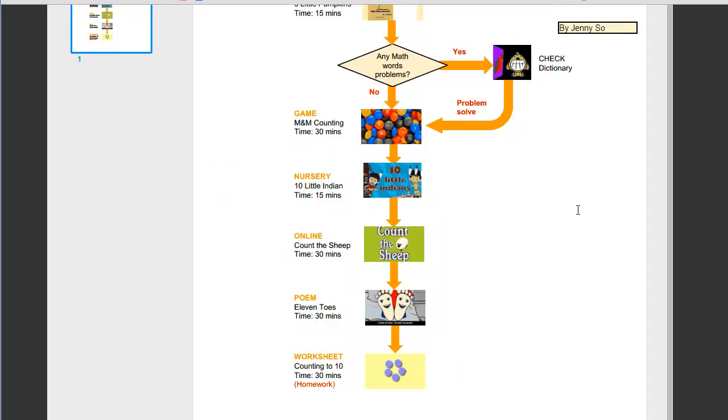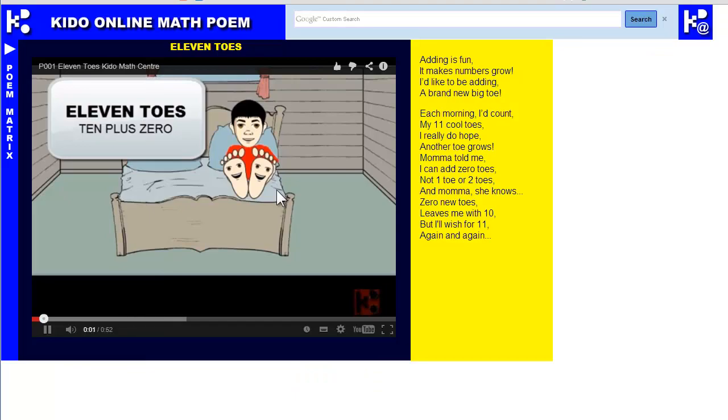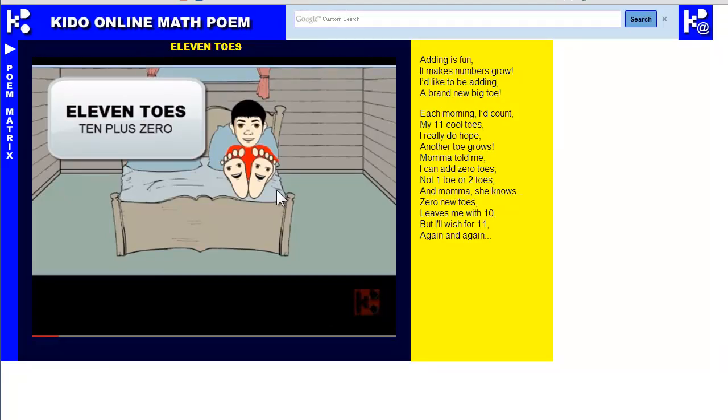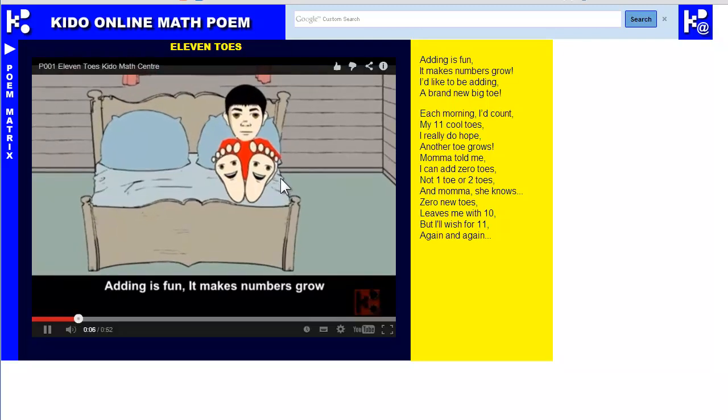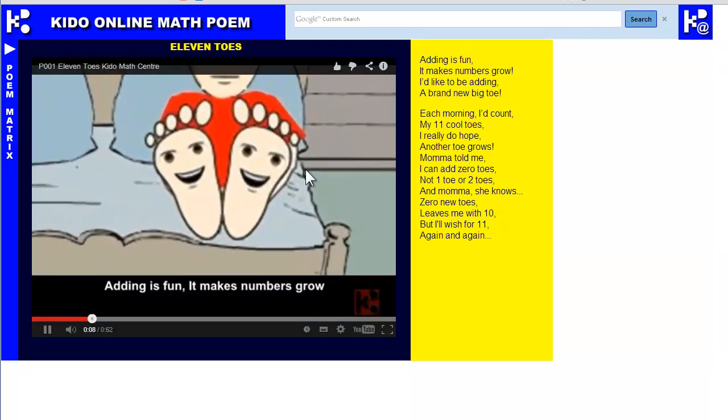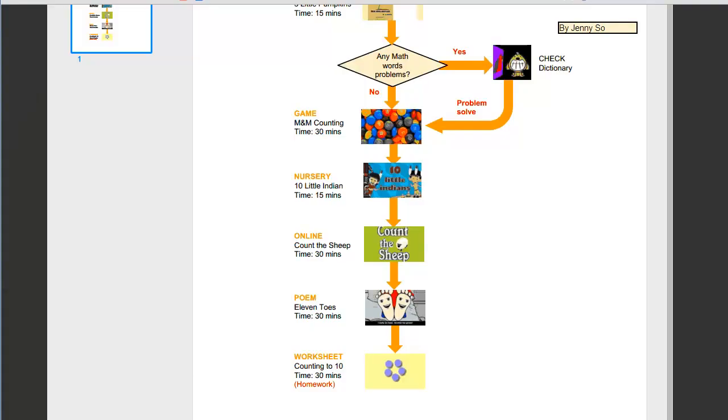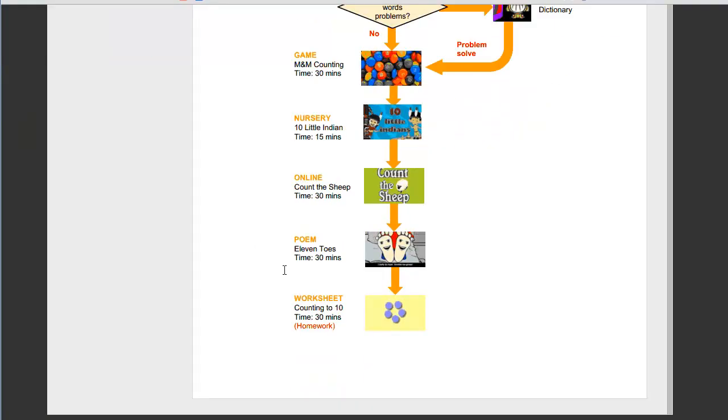Let's go back to the flowchart. And then he has some homework to do. That's all, and the whole lesson will be finished. He can do some homework by studying the poems. This poem is called Eleven Tools. Anything is fun, it makes numbers grow.